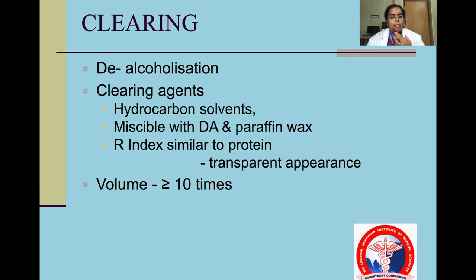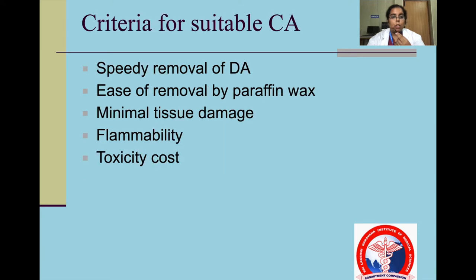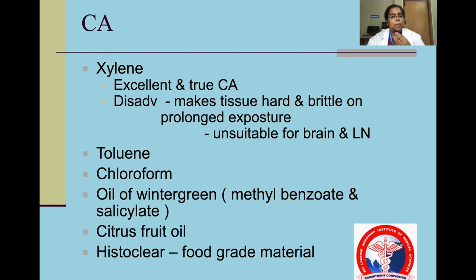Clearing is de-alcoholization. Clearing agents include hydrocarbon solvents that are miscible with the dehydrating agent and paraffin wax. Their refractive index is similar to protein, which helps to give a transparent appearance. Volume should be equal to or more than 10 times the volume of the tissue. Criteria: speedy removal of the dehydrating agent, easy removal of paraffin wax, minimal tissue damage, less flammability, less toxicity and lesser cost. Examples include xylene, which is an excellent true clearing agent, toluene, chloroform, oil of wintergreen, citrus fruit oil and histoclear.